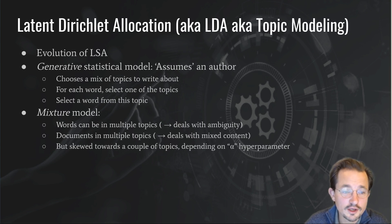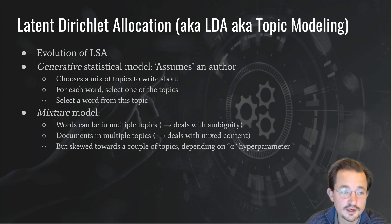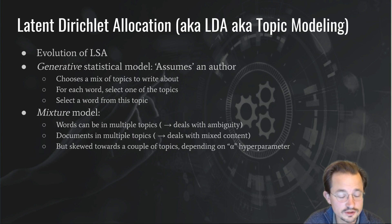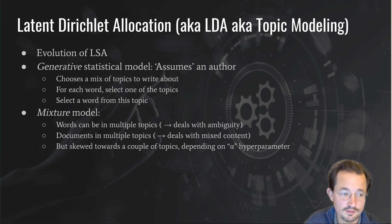Latent Dirichlet allocation, or LDA, which is the form of topic modeling we are talking about now, was proposed more or less as an evolution of latent semantic analysis. The two big differences between LSA and LDA are that LDA has a very strong generative statistical model. What we mean there is that it starts from an assumption about how a text is constructed, and then that assumption is used to build a mathematical model for the construction of texts, and then the actual texts that we observe are used to fit the parameters in this mathematical model.